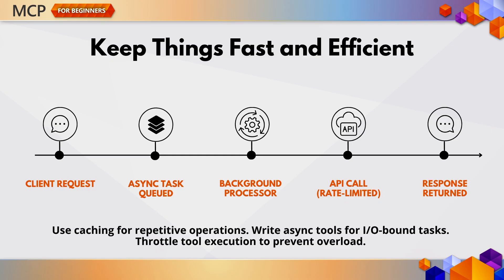Performance matters, especially in production. Use caching to avoid repeated expensive operations. Adopt asynchronous patterns for input-output bound tasks, and throttle tool usage to prevent overloading your system. This is especially critical for tools that call external APIs or process large datasets. A little optimization goes a long way.